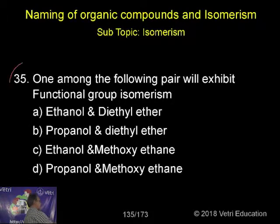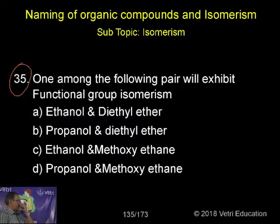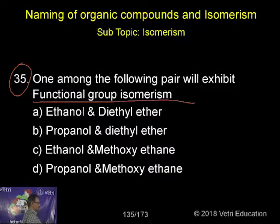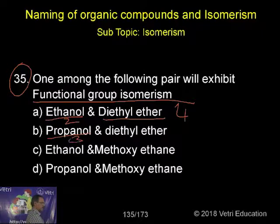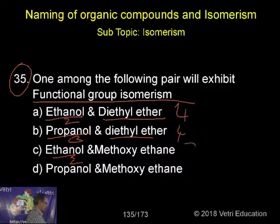Find which one among the following pairs exhibits functional group isomerism: option 1 - ethanol and diethyl ether, option 2 - propanol and diethyl ether, option 3 - ethanol and methoxyethyl, option 4 - propanol and methoxyethyl.